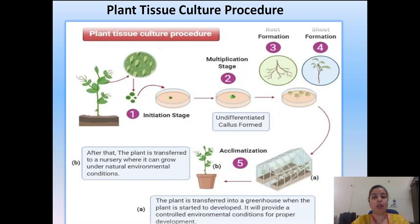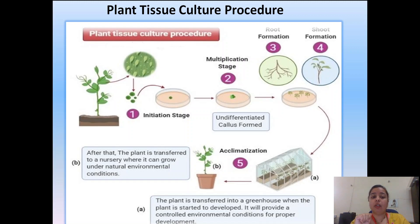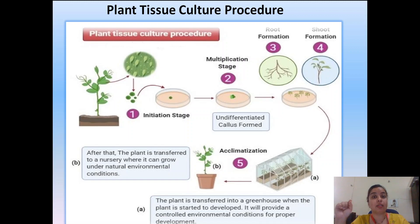For each medicinal plant there are specific explants that are studied and are successful — not every part of every plant always works. First we take the explant, sterilize it thoroughly with surface sterilization, then put it in the liquid or solid culture medium. After placing the explant in the plant tissue culture medium, the initiation stage occurs — cell division starts.